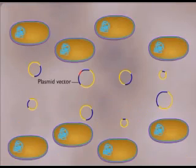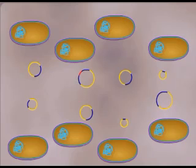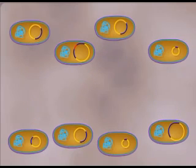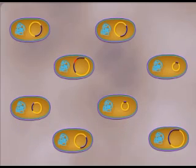The next step is to incorporate the plasmids into bacterial host cells by transformation. Each cell contains a different segment of DNA from the original organism. Taken together, these cells represent a DNA library.